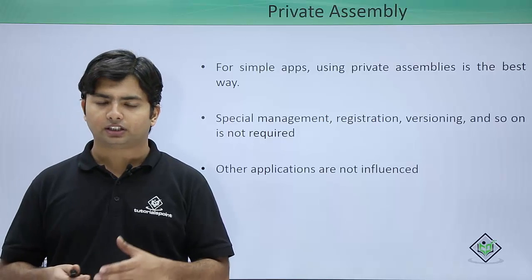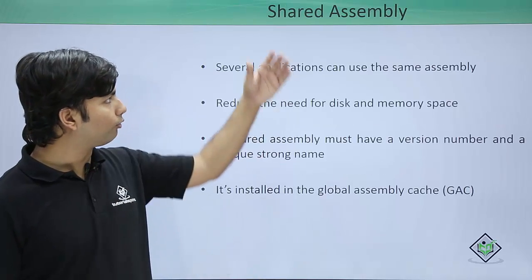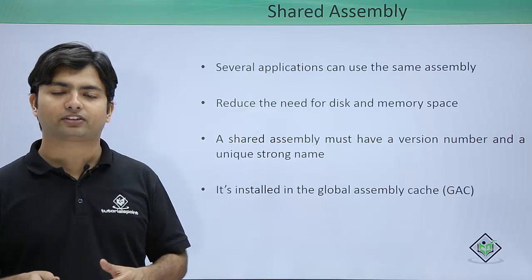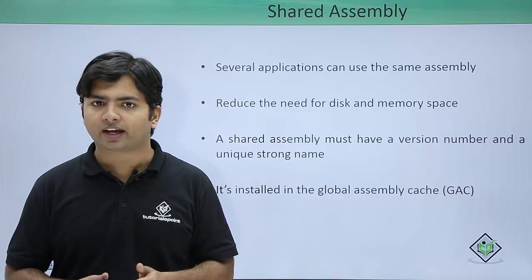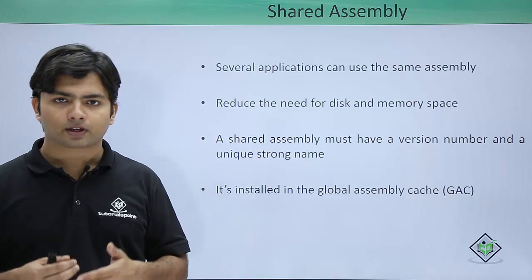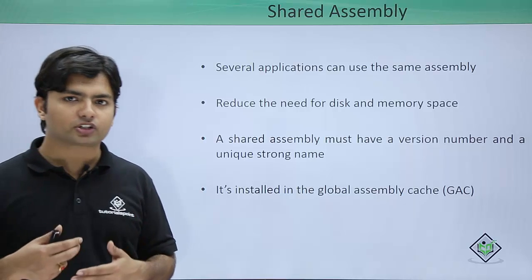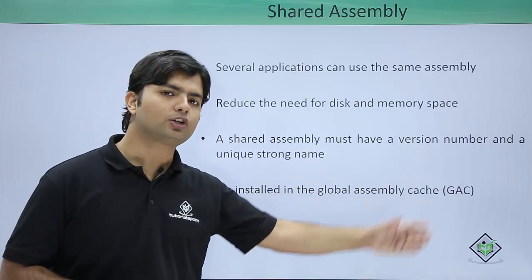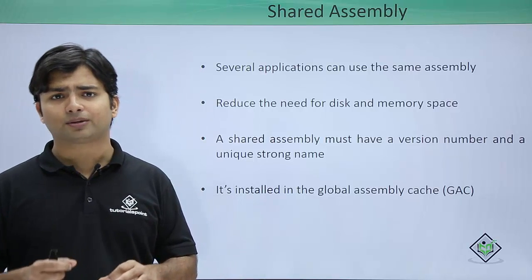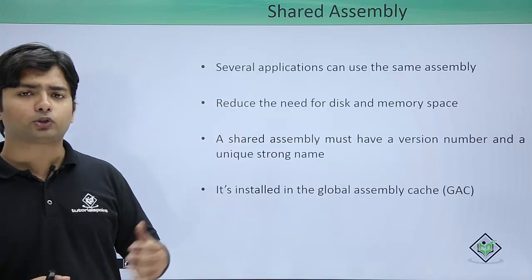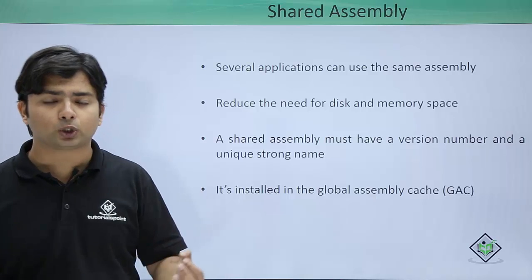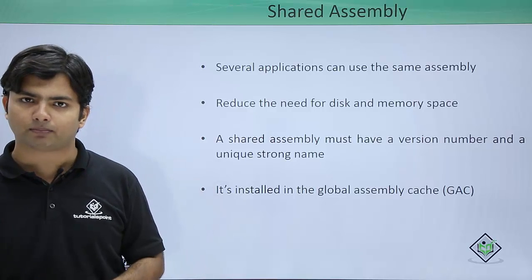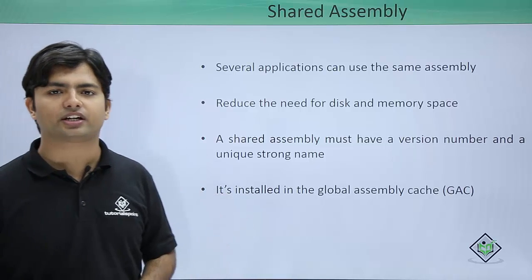But if you want to share a particular assembly across multiple applications, you can go for the shared assembly. To make any assembly shared, first of all you will have to make some changes — such as assigning a strong name through the SNK file, adding versioning, and then installing that assembly in the Global Assembly Cache, or GAC. Once you install the assembly in the GAC, you will be able to reference that assembly, and unlike a private assembly, a local copy will not be generated. This is the difference between a private and a shared assembly.